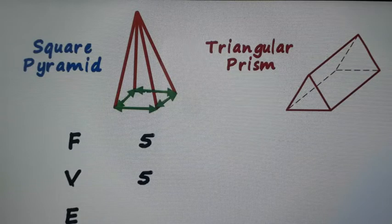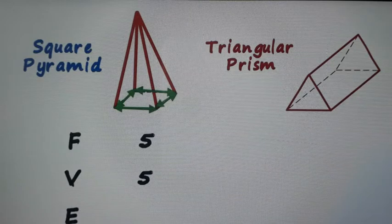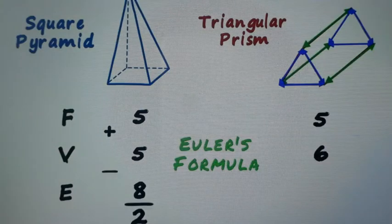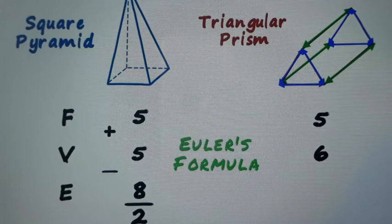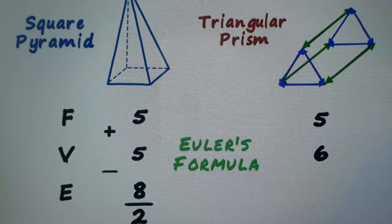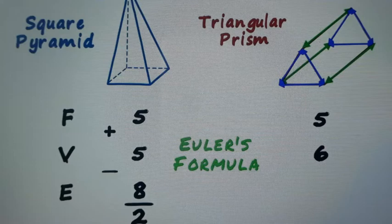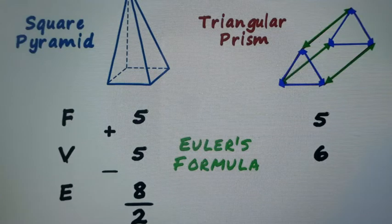So total number of edges are eight here. Again, in this case of square pyramid, we get number of faces 5, number of vertices 5, and number of edges 8. And if we add up the first two and subtract the third one from the result, then we get 2. This is again proved. Now let us talk about triangular prism.